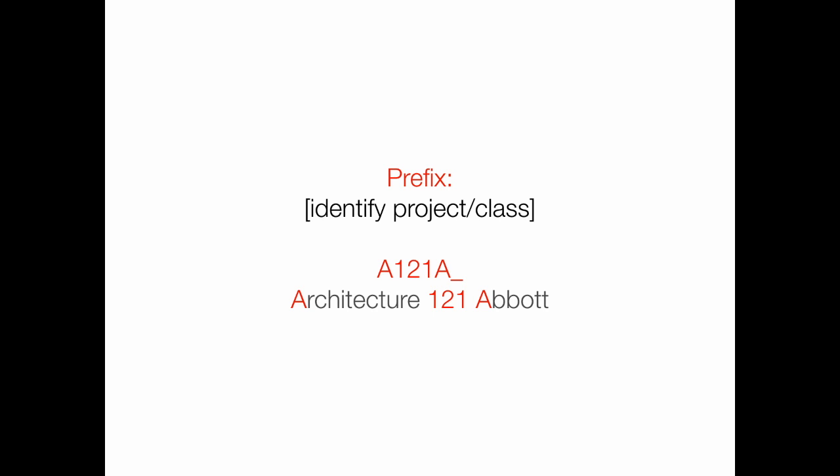For example, if I'm in Architecture 121 with Professor Abbott, I'd assign a prefix: the subject — Architecture, so 'A' — the course number '121,' and the first letter of the professor's last name, 'A' for Abbott. This is probably a little too much detail for you at this stage since you tend not to repeat classes. You could just call the prefix 'A121.' At the grad level, though, you repeat the same studio class multiple times, so you need something to distinguish which semester — that's why I added the professor's name.